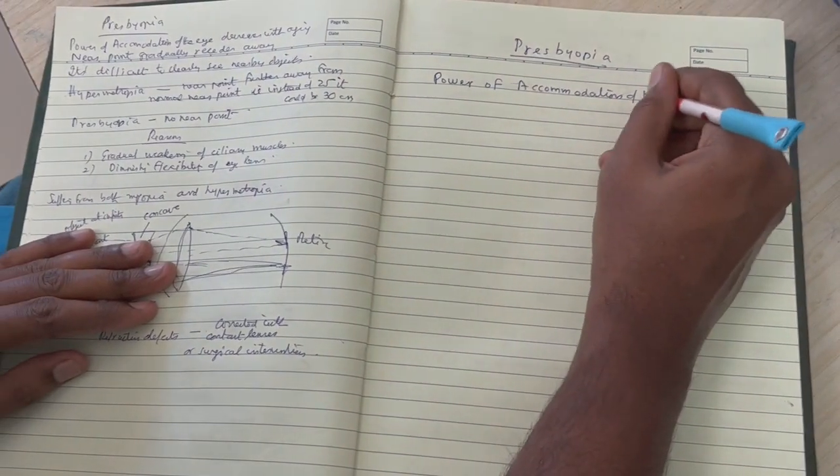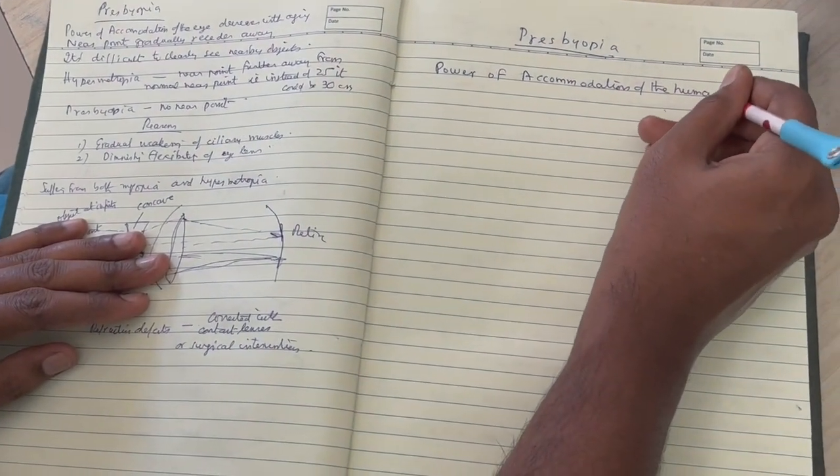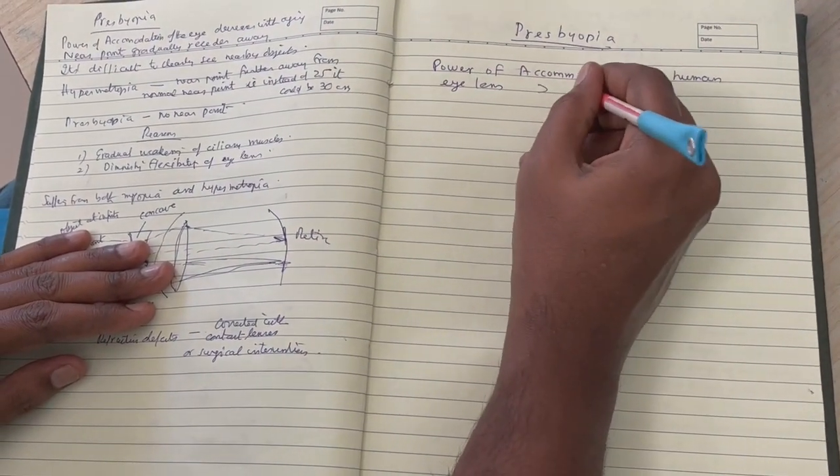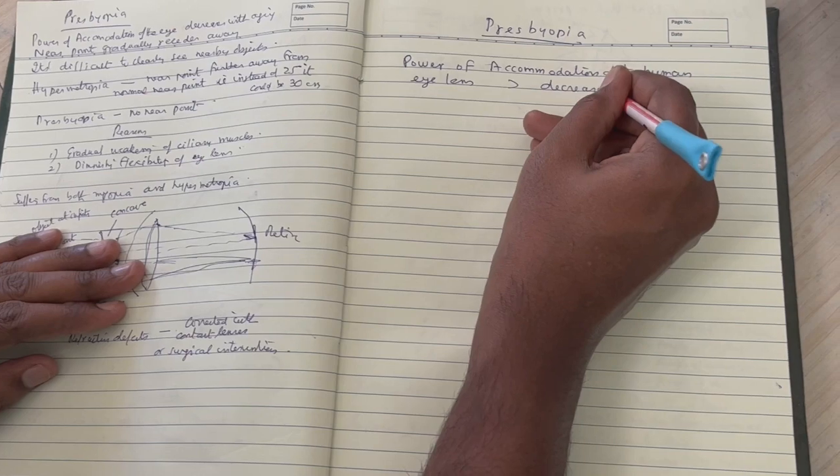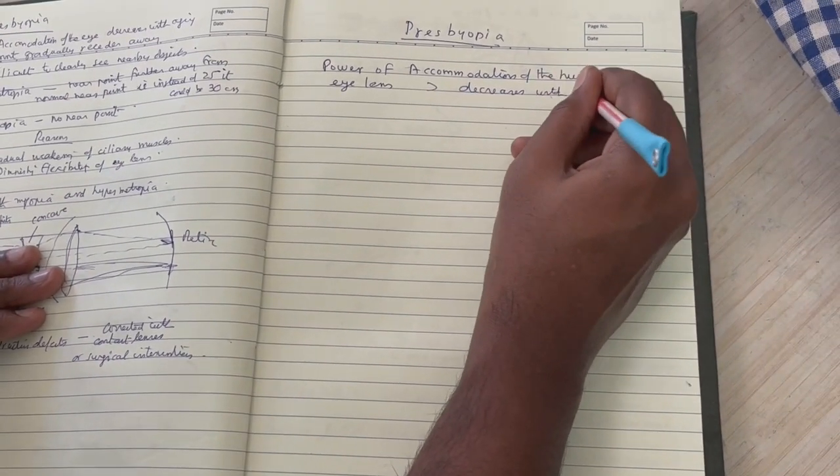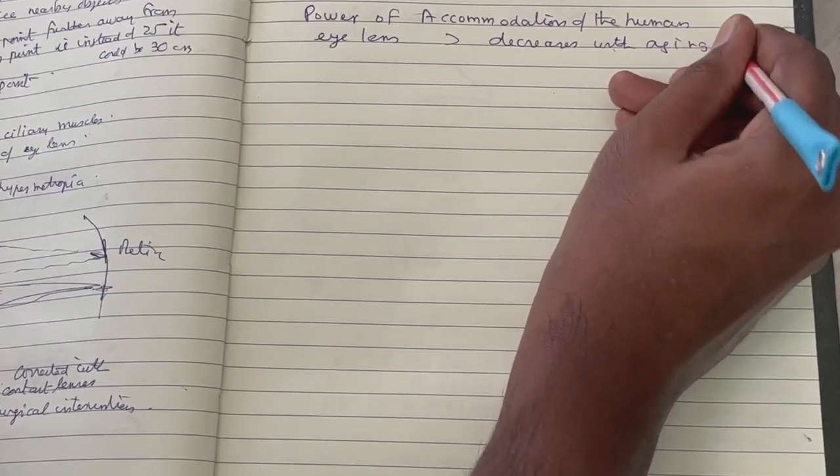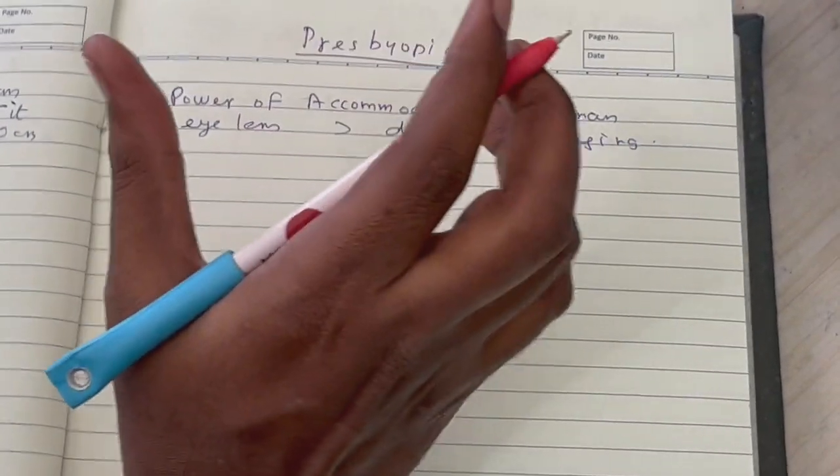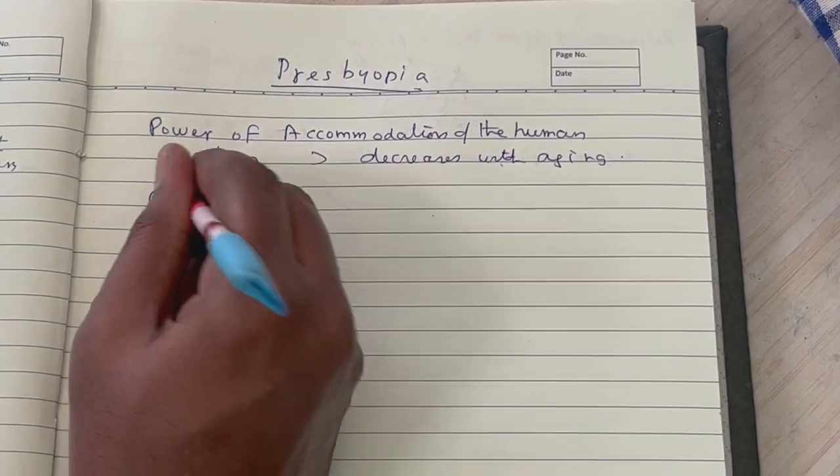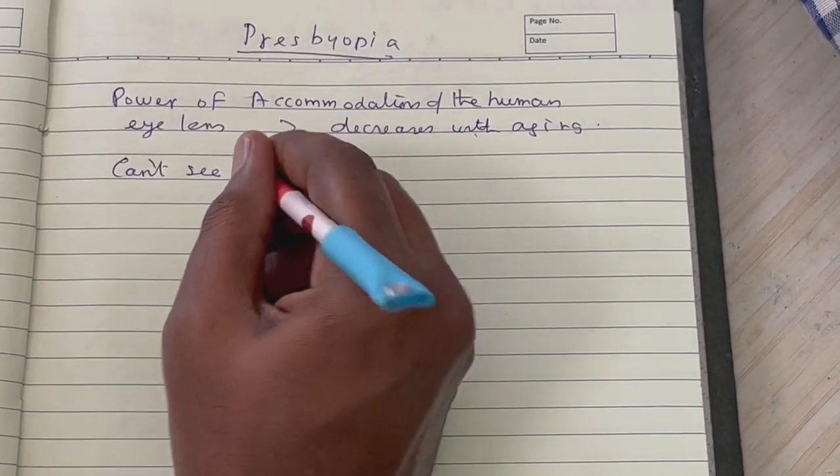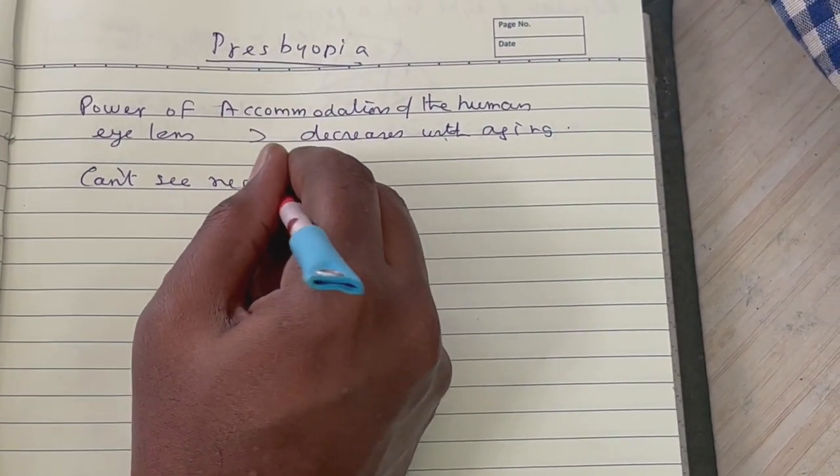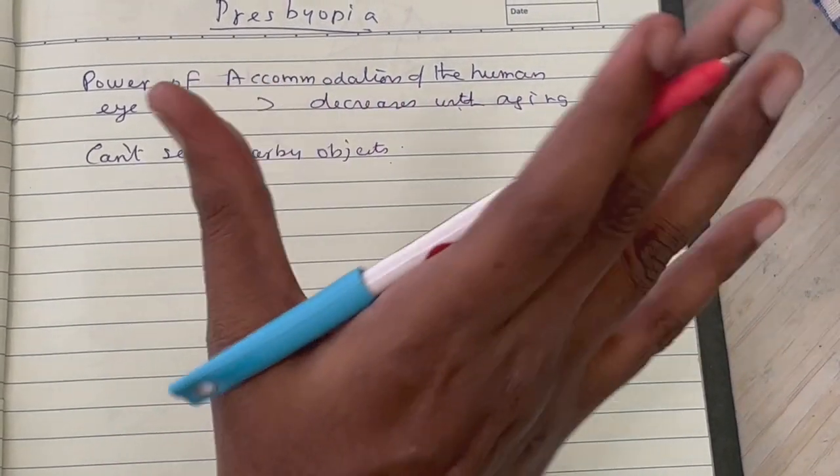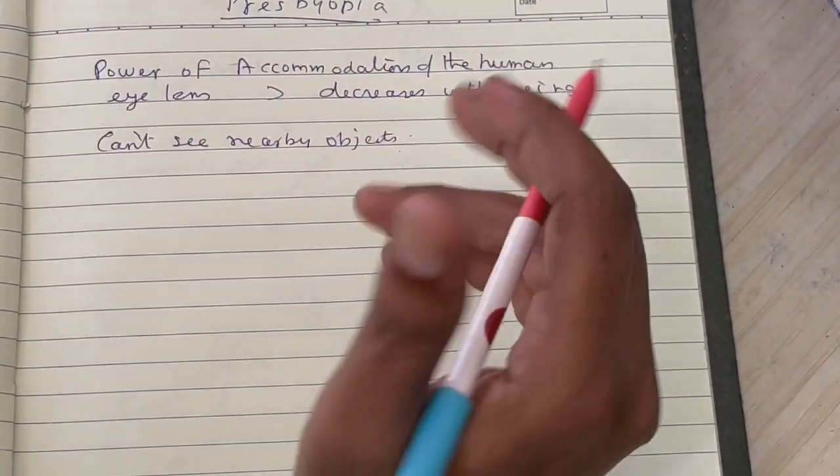It usually decreases with aging. It simply means that people with presbyopia can't see nearby objects. They won't be able to see very near objects in a clear manner. Now there's a very key point here.